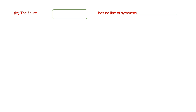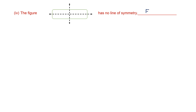Next one: this figure has no line of symmetry, is what the statement says. I can divide it with one horizontal line of symmetry and one more vertical line of symmetry. So this statement, which says the figure has no line of symmetry, is false.